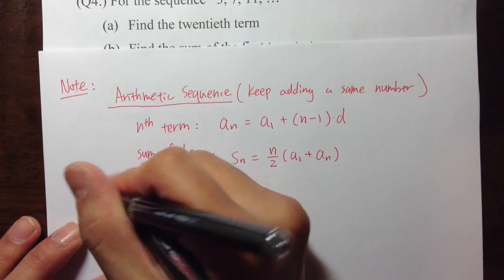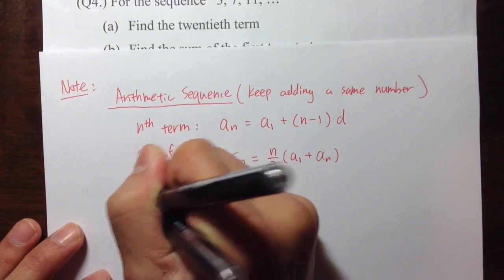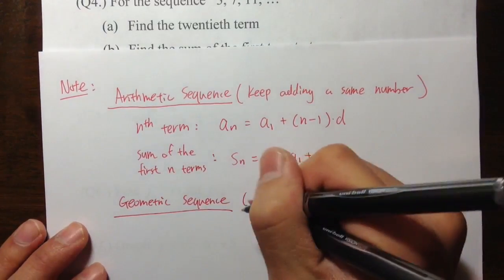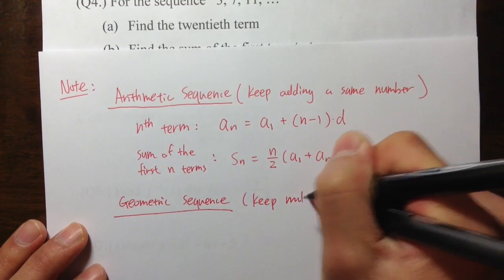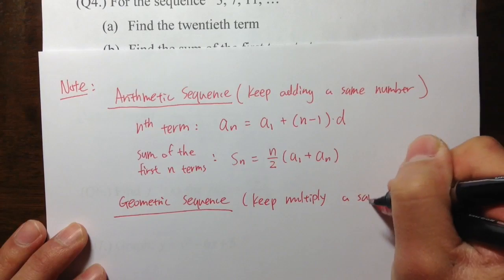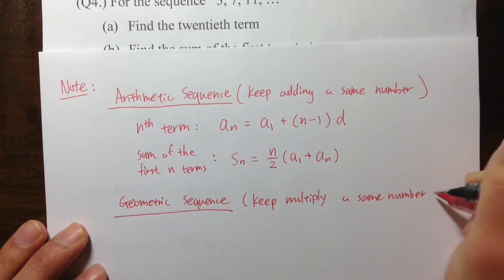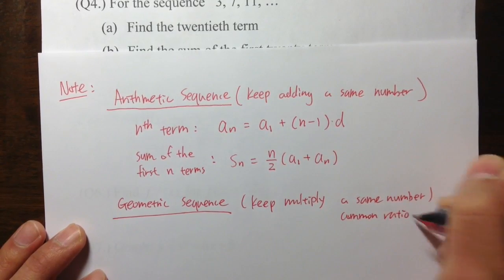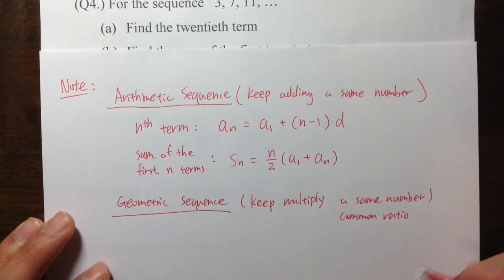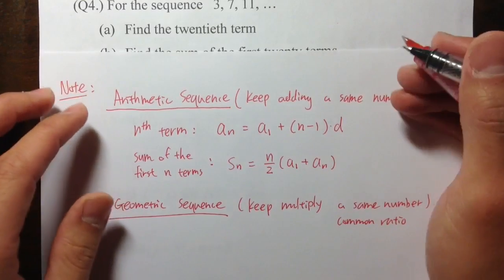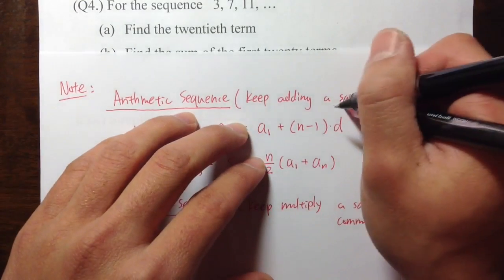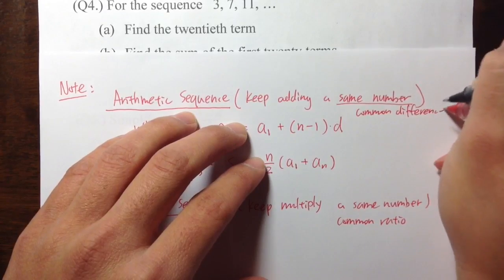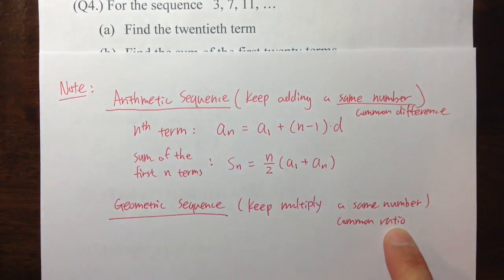There's another sequence called the geometric sequence. That's the case when you keep multiplying the same number over and over. That same number is called the common ratio. The common ratio can be negative, a fraction, or a decimal. For the arithmetic sequence, that repeated number is called the common difference, denoted d. For the geometric sequence, we use r.